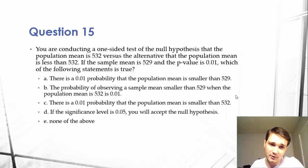We can see that B is correct because we're pulling both the sample and the population. So the probability of observing a sample mean smaller than 529 when the population mean is 532, which is what we have set up in this situation, is 1%. That's exactly what we're saying with this statement.